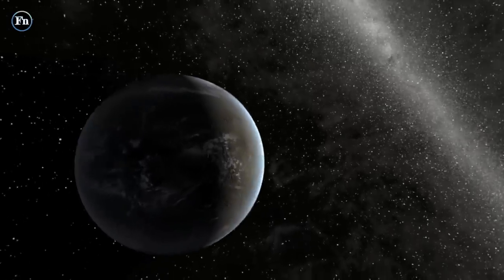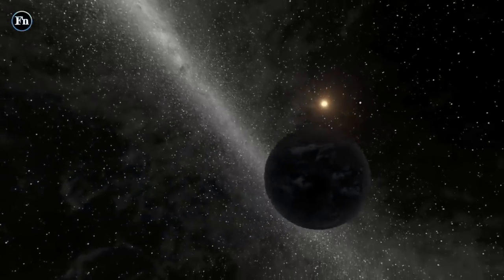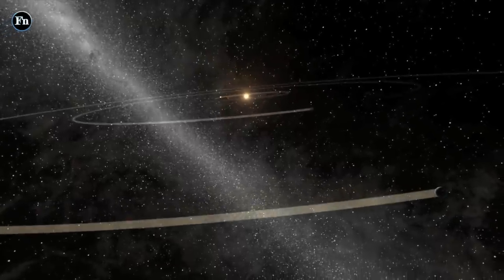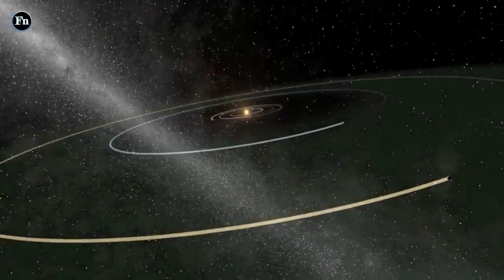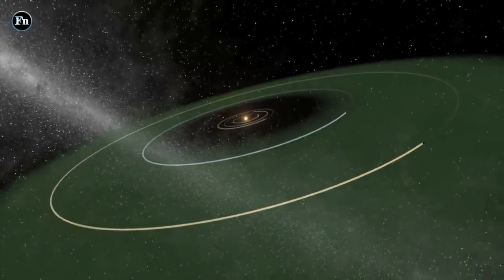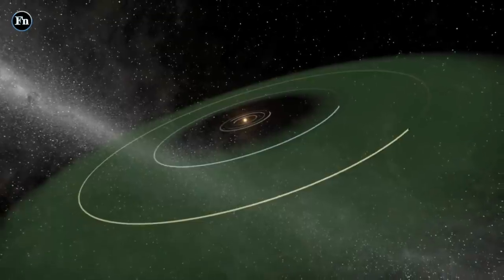The four exoplanets circle a red dwarf, a star smaller and dimmer than the sun, called K2-72, which lies 181 light-years away from Earth in the Aquarius constellation. These four worlds are between 20% and 50% wider than Earth, making them almost certainly rocky.